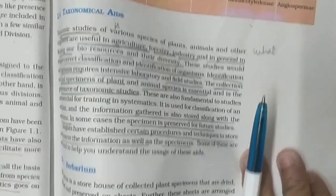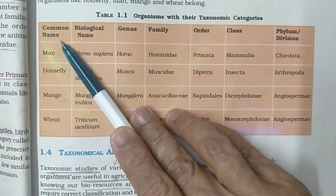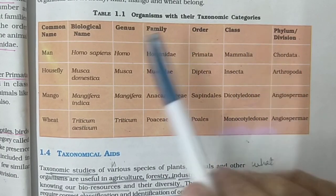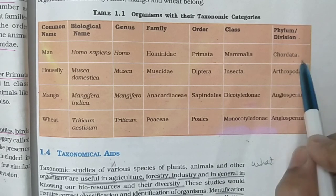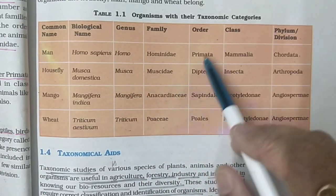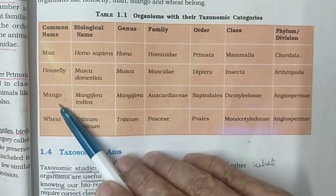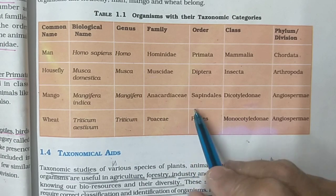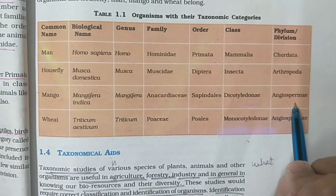Now let us look at this table. It shows common name, biological name, genus, family, order, class, phylum or division. For man: Homo sapiens, genus Homo, family Hominidae, order Primata, class Mammalia, phylum Chordata. For housefly: Musca domestica, genus Musca, family Muscidae, order Diptera, class Insecta, phylum Arthropoda. For mango: Mangifera indica, genus Mangifera, family Anacardiaceae, order Sapindales, class Dicotyledonae, division Angiospermae.